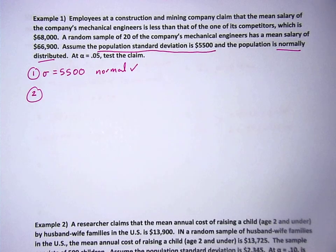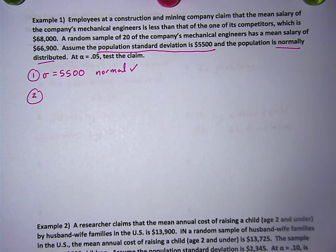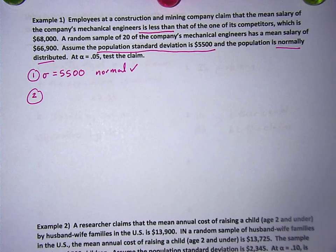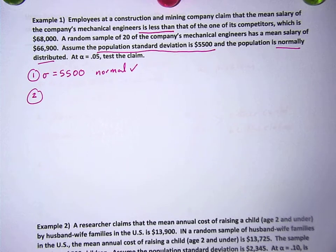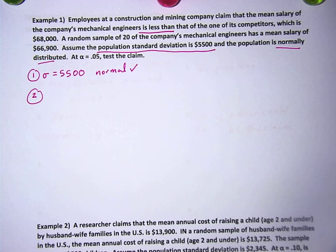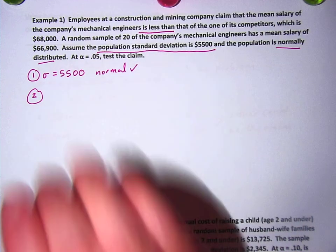Employees at a construction and mining company. This is, by the way, if you're going to be a statistician, this is a lot of what you'll be doing. Employees at a construction and mining company claim that the mean salary of the company's mechanical engineers is less than. So they're claiming that their salaries are less than one of their competitors, probably trying to argue that they should have a salary bump. They took a random sample of 20 of the company's mechanical engineers, and that has a mean salary of $66,900. And I'm sure you're thinking right now, why are we even doing this? We've already proven that if we take a sample, that the average is lower than $68,000. But the problem is that there's not just 20 people at this company. Maybe you've got a weird sample. Maybe you've got some people who just happen to have very low salaries. And so it's not just a question of is it less, or is it more, or is it equal to. The question is, is it low enough? Is it low enough below $68,000 that we can pretty much say, look, we're pretty positive that this is true?